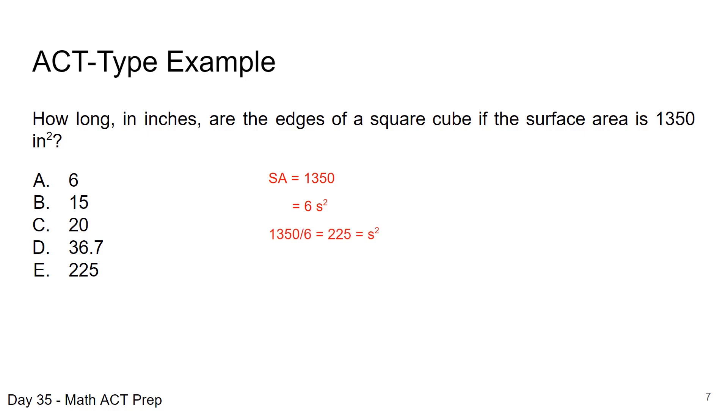So now we're going to solve for side because we're looking at how long are those edges, and we're going to divide 1350 by 6, and that gives us 225 for the square of the sides. But we want one side, so we'll take the square root, and we get a side length of 15 inches, which is answer choice B.